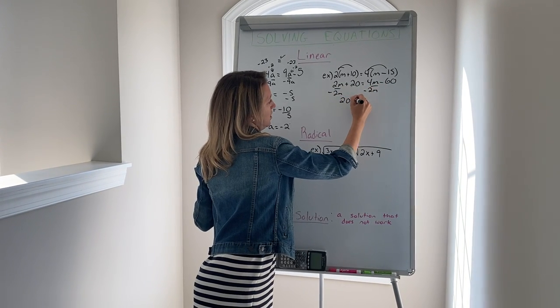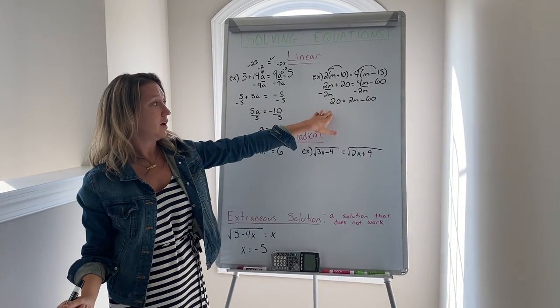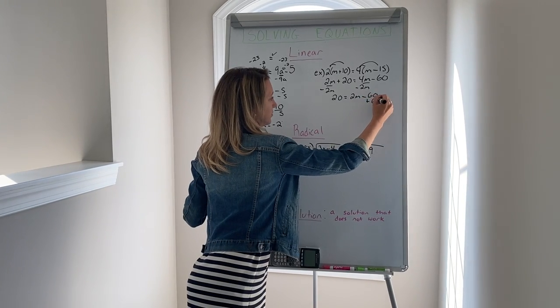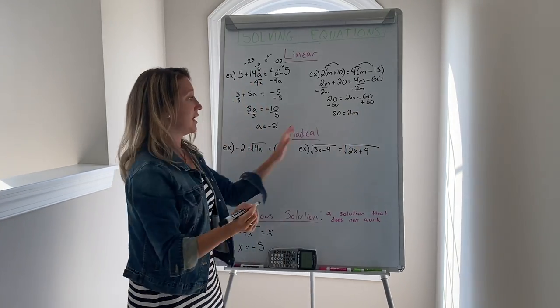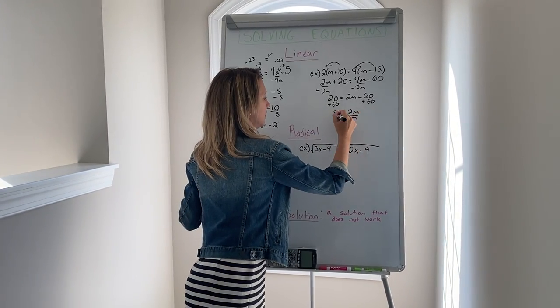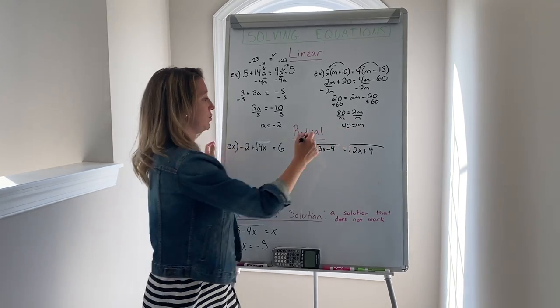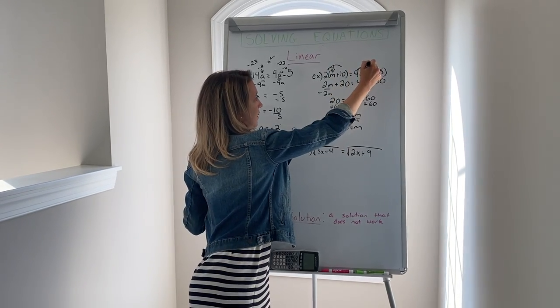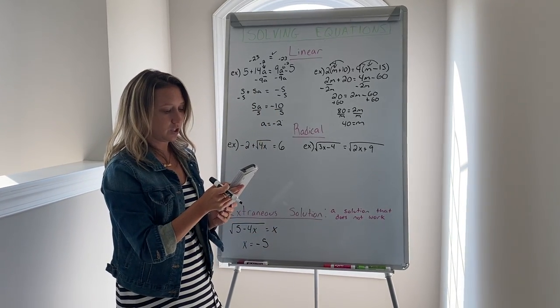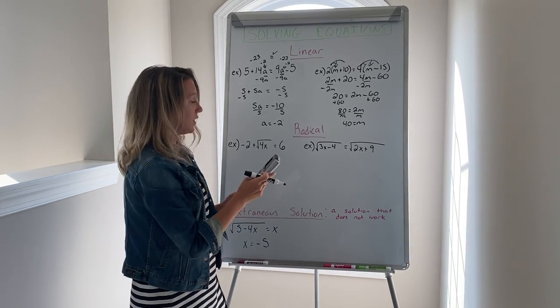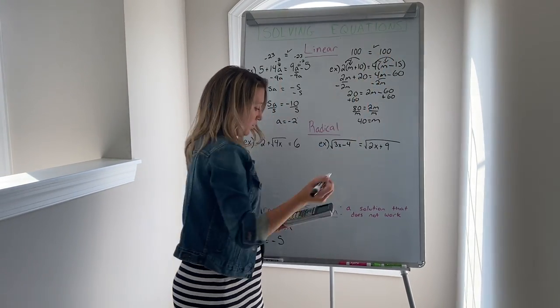So this would be 20 equals 2m minus 60. Now I want to move the constant to the other side by adding the opposite sign. That would get me 80 equals 2m. And then we have to divide to get the m by itself, and so m would equal 40. Now again you want to always plug that into the original equation. So you plug 40 into the m here, you plug 40 into the m here. When you do that you should get 100 on either side. So this side would equal 100, this side equals 100, and then again you know you did it correctly.